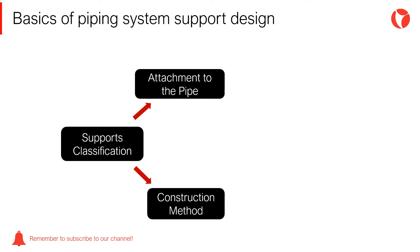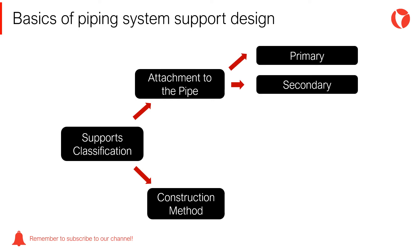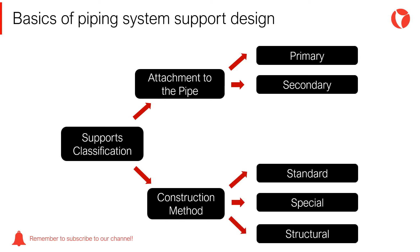According to the way they are attached to the pipe, they are classified into primary and secondary — those supports attached to the structure or foundation, which support the primary supports. According to their construction method, they are divided into standard, commercially available; special, custom designed for an application; or structural, such as large supports like pipe racks.